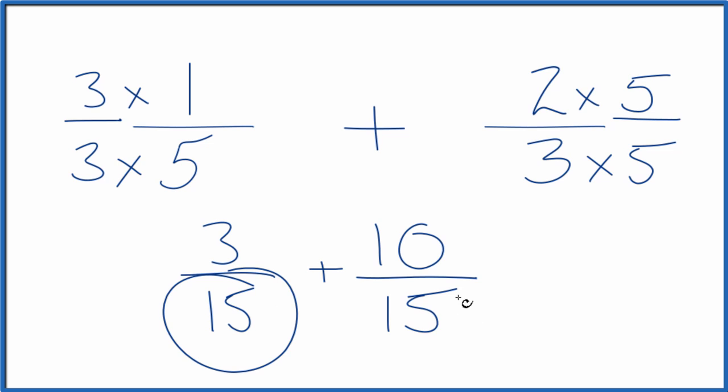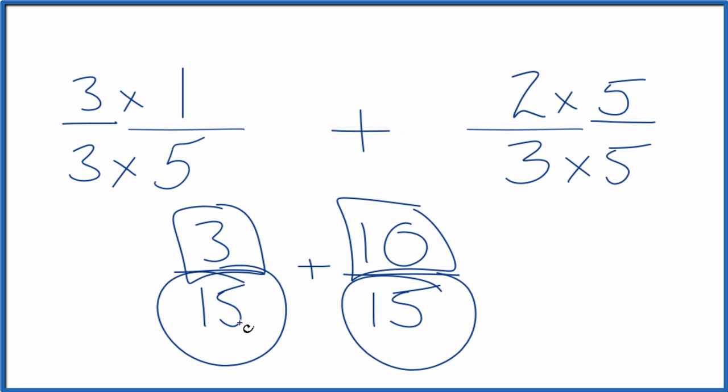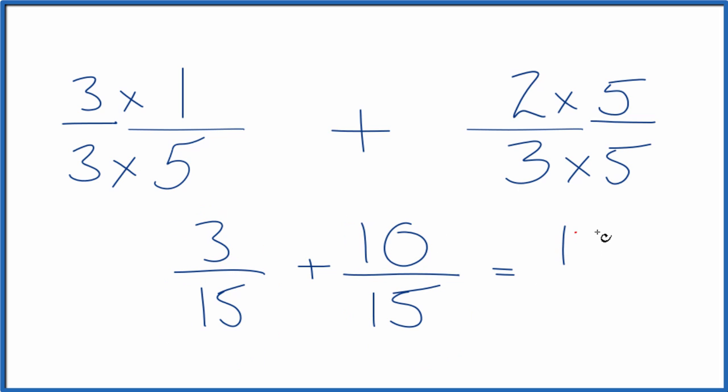So now we have the same denominator. We can just add the numerators together, keep the denominators the same. So 3 plus 10 equals 13.